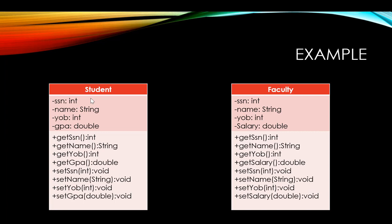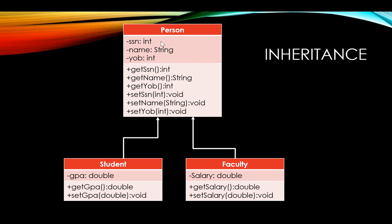The idea of inheritance is to increase the usability of our code. Instead of rewriting the same variables and methods in both classes, we want a general class that holds everything they have in common, and these two classes can inherit or reuse the code from that superclass. So I can create a Person class, since both students and faculty are persons, and keep track of social security number, name, and year of birth there.